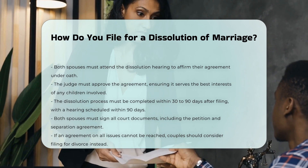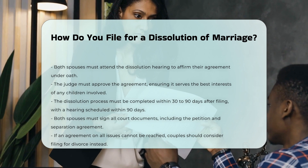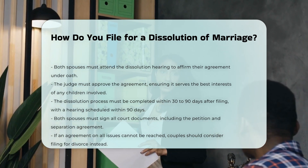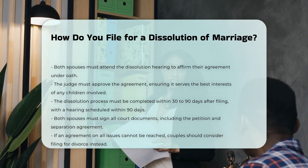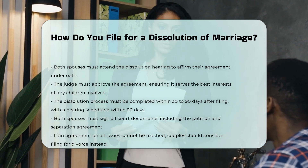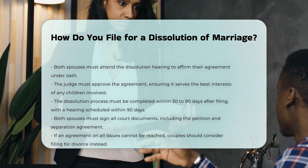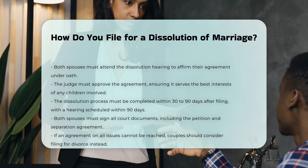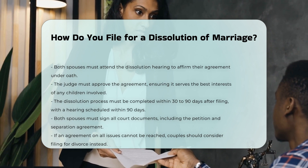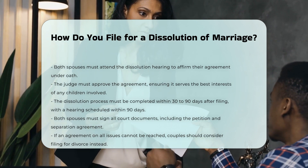Additional considerations: You must both sign all documents filed with the court, including the petition and the separation agreement. There cannot be any children born to the wife during the marriage that are not the husband's children, as third parties cannot be added to the case in a dissolution. If you find that you and your spouse cannot agree on all issues, you will need to consider filing for a divorce instead.